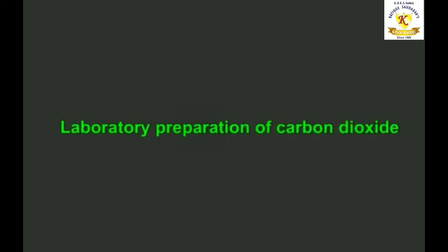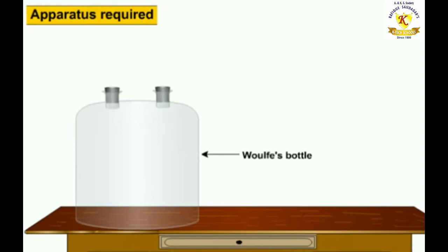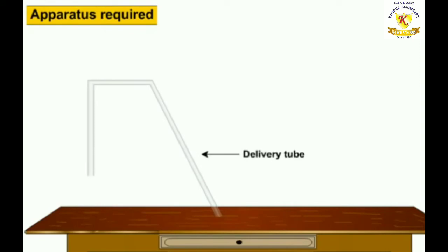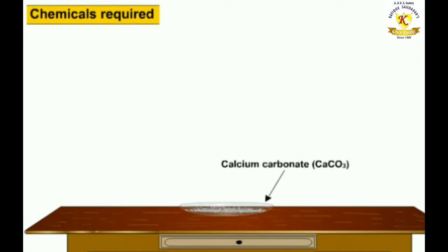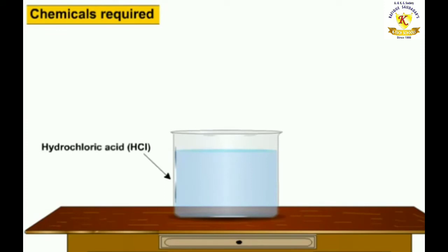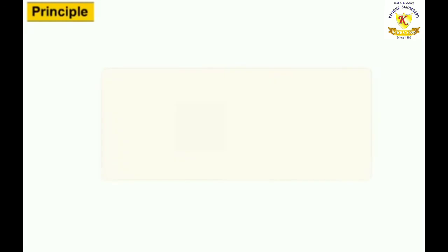Now let us see the laboratory preparation of carbon dioxide. The apparatus required are Woulf's bottle, thistle funnel, delivery tube, and gas jar. Chemicals required are calcium carbonate CaCO3 and hydrochloric acid HCl. The principle: